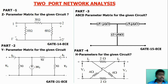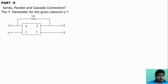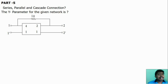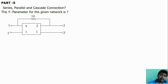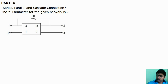In the part five video, we discussed the interconnection of networks: series, parallel, and cascade connections. We covered what happens when Z-parameters are series connected, Y-parameters are parallel connected, and ABCD parameters are cascade connected. Just refer to that video for these concepts.